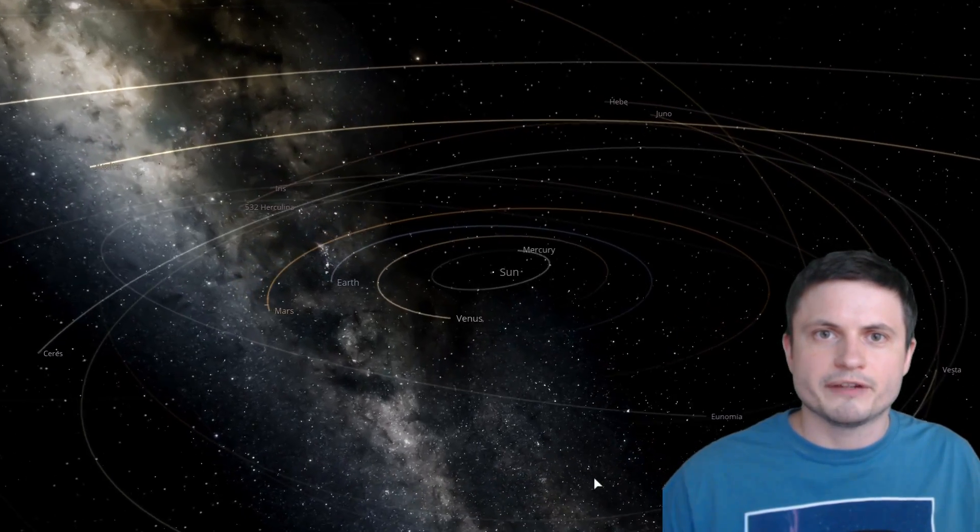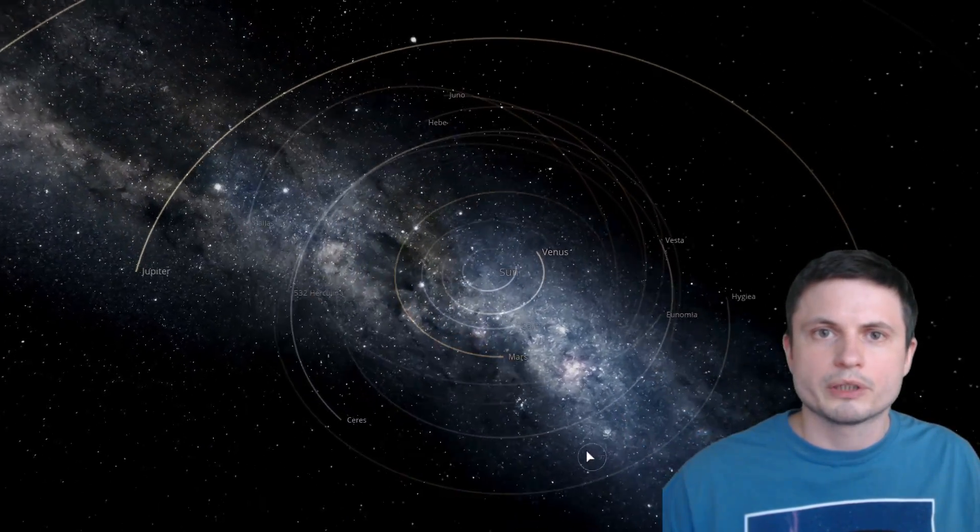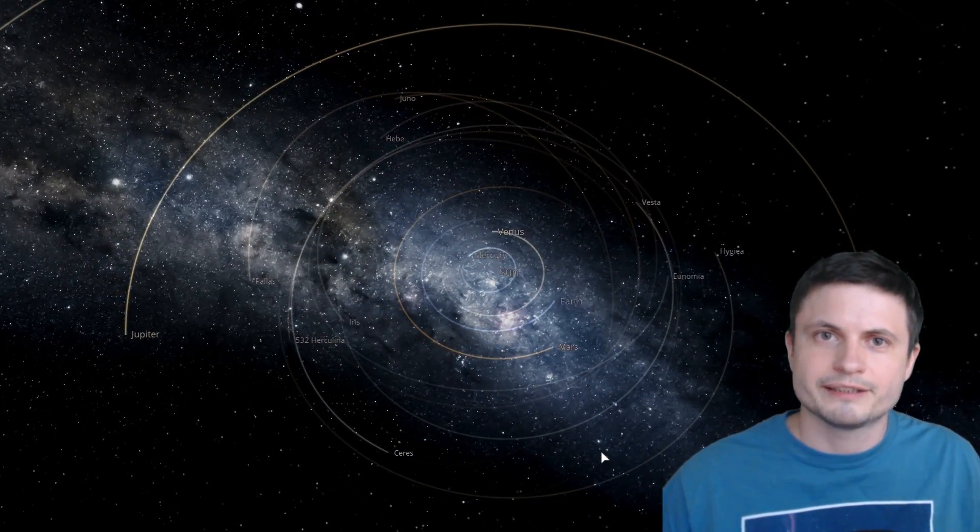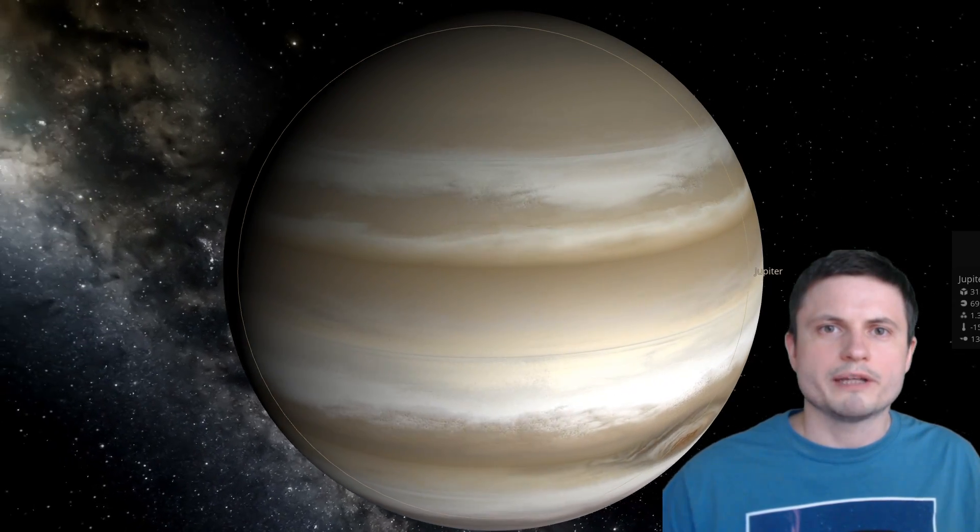So first let's identify the problem. If we look at our own solar system we'll discover four terrestrial or rocky planets in the middle, or actually a lot closer to the sun. And as we move away from the sun we'll discover gas giants like Jupiter and Saturn.